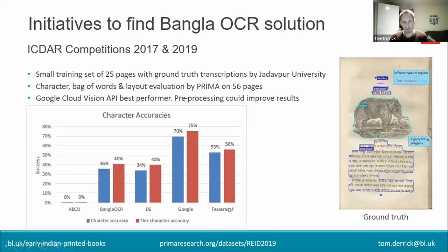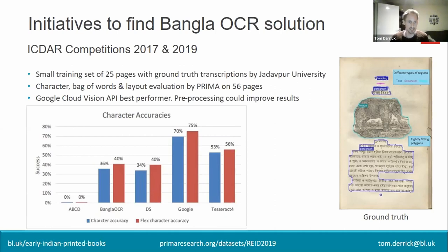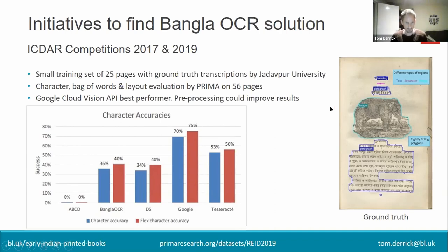Going through the results quickly: we also compared to Tesseract version 4, which was a little bit lower. DS was a team based at Microsoft India. Bangla OCR is a private lab based in Kolkata called the Geonosis Lab. ABCD is a team from the computer science department at Jadavpur University — the reason they show zero percent is because they weren't able to submit text results; however they did perform very well in page segmentation and region classification, scoring about 70% accuracy, with Google at 68% and Tesseract at 67%.